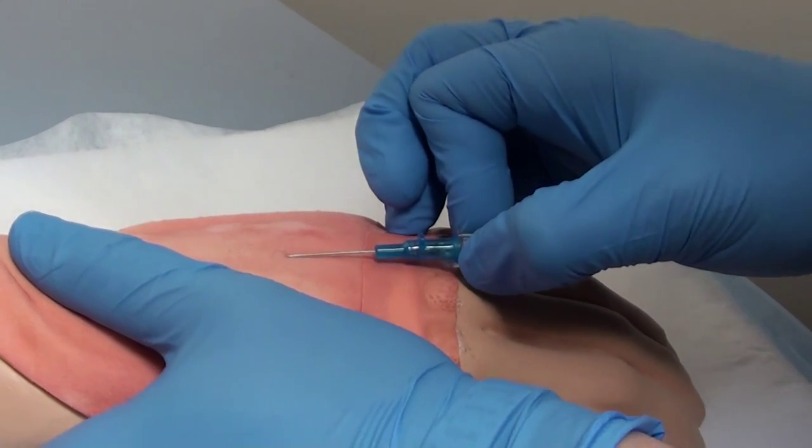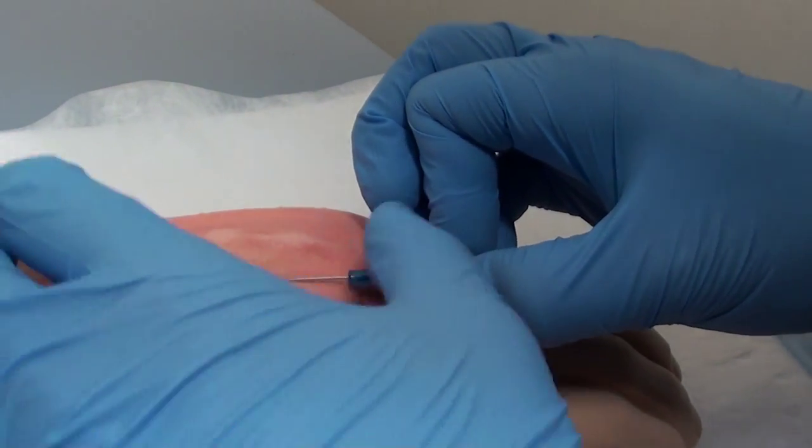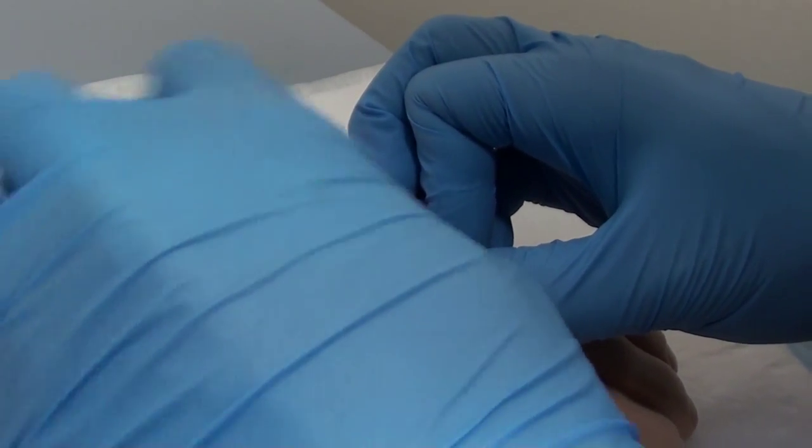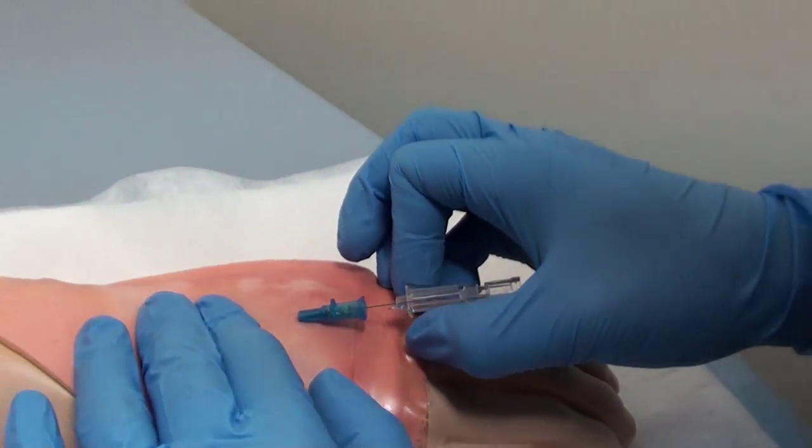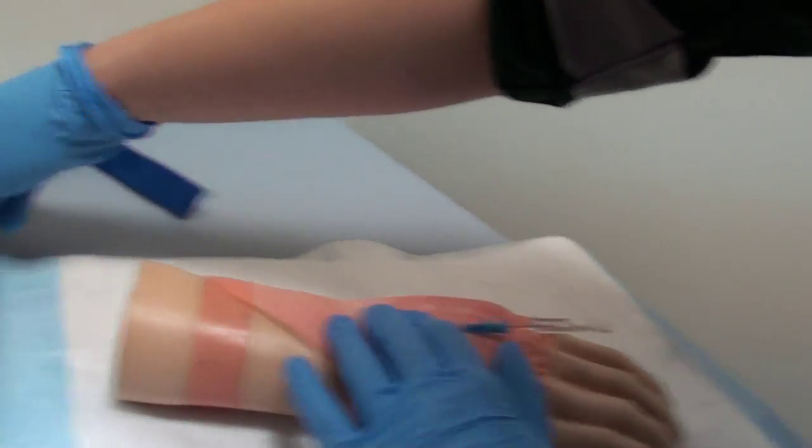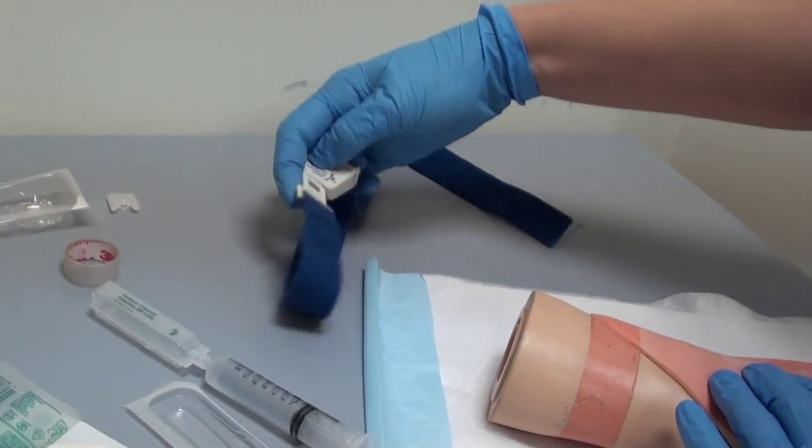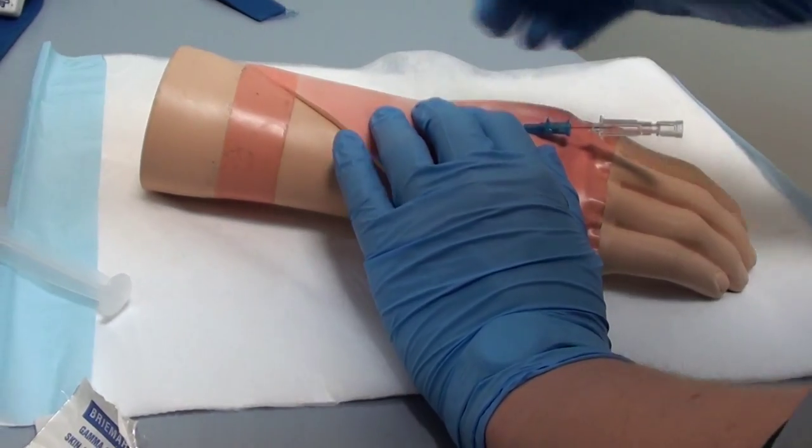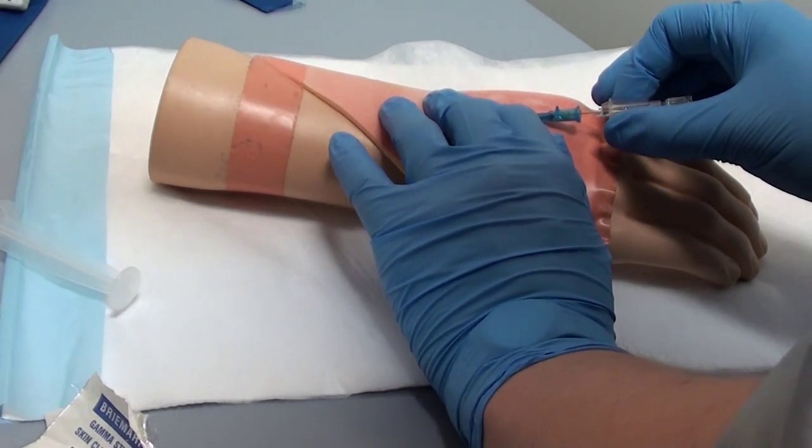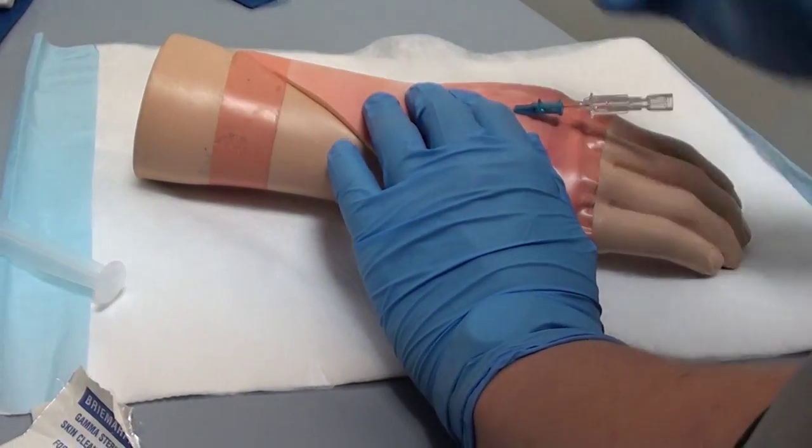That's going in now. Advancing that cannula into the vein. Just to clear that off. Before I remove the sharp, I'm going to release that tourniquet. I'm assuming that I do have flashback. It's an issue with this arm, why we don't have any blood coming through.